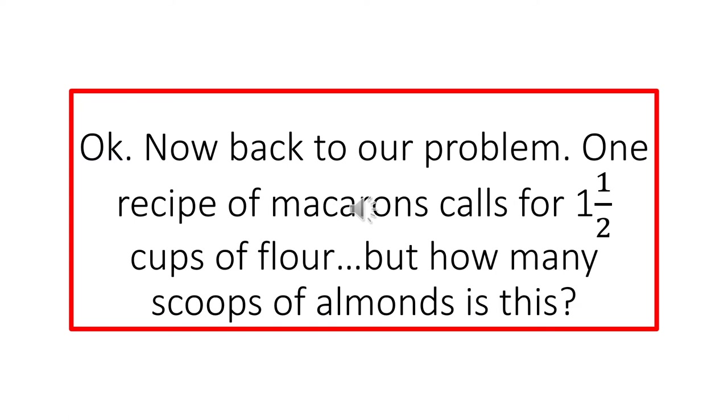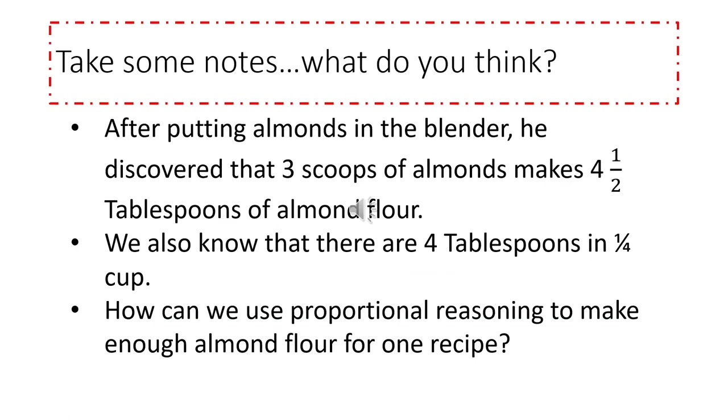Okay, now back to our problem. This is the time when you probably want to use your paper and pencil to write a few notes down. So one recipe of macarons calls for one and a half cups of flour. But how many scoops of almonds is this? Here's some other things we want to keep in mind. You also might want to write this one down. After putting almonds in the blender, Nick discovered that three scoops of almonds made four and a half tablespoons of almond flour. And we also know our conversion factor of four tablespoons for every fourth of a cup. So how can we use proportional reasoning to make enough almond flour for one recipe?